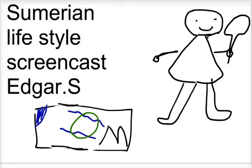Sumerians lived in Mesopotamia, which is now called Iraq. The climate there is a desert.